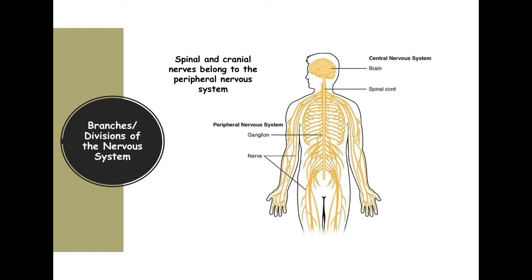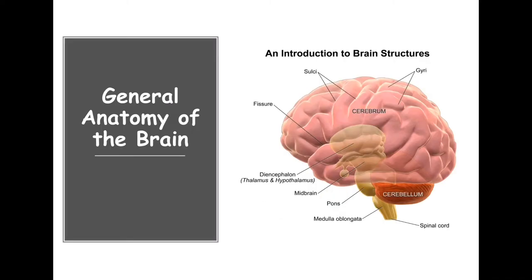A ganglia is just a collection of cell bodies from different nerves. They form different regions where information collects, and the determination of where that information goes is handled by those ganglia. This is just an overview introduction of the brain, which is part of the central nervous system. We'll have another video giving more detail regarding the structures of the central nervous system. This is just showing the three general parts. The biggest part of the brain is called the cerebrum, and there are multiple lobes associated with that.